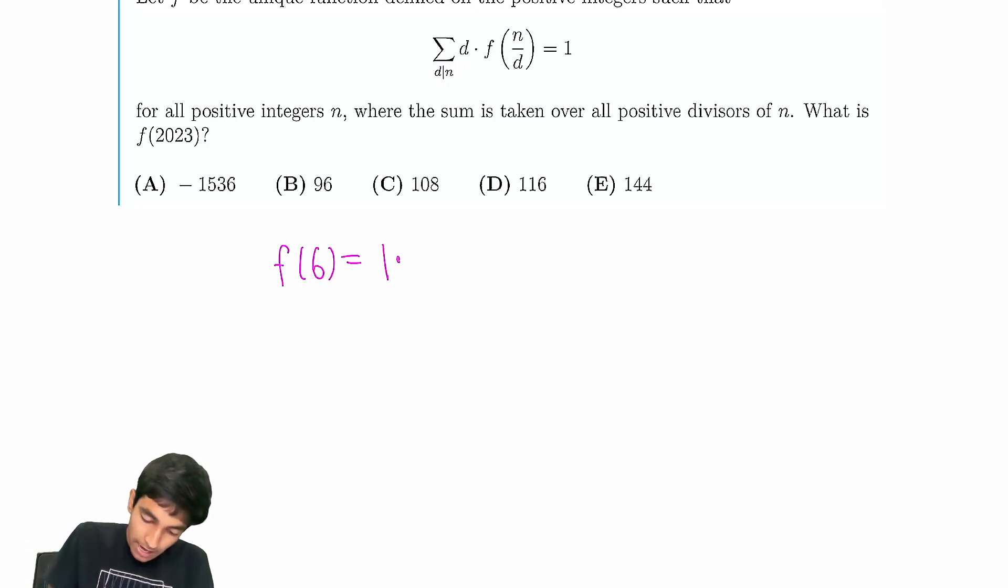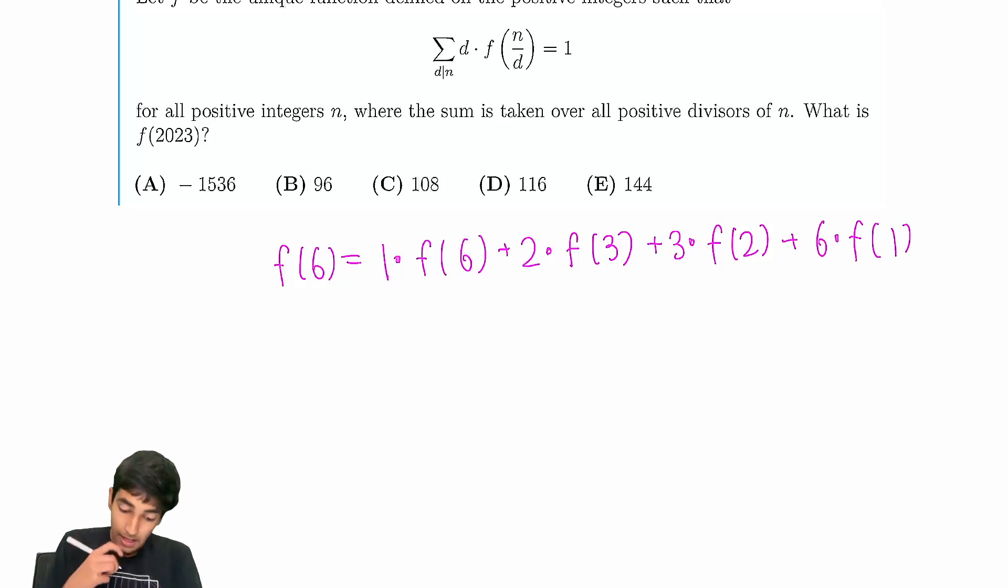And what we do for each of the divisors is we multiply by f of n by 6. So we would have 2 times f of 3, and then 3 times f of 2, and then 6 times f of 1. This is all equal to 1.